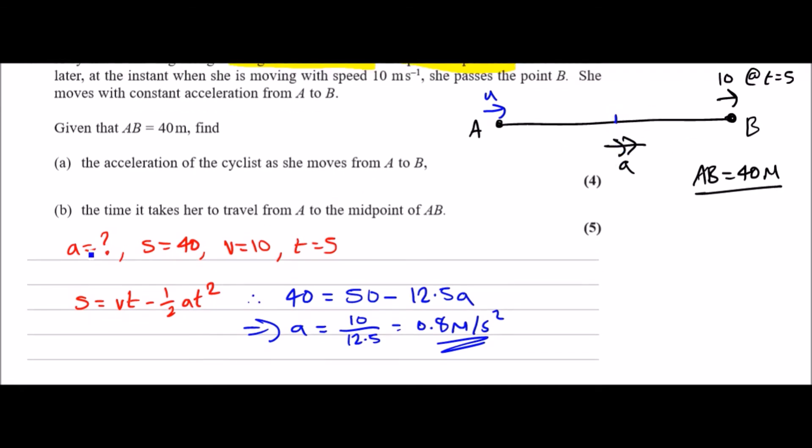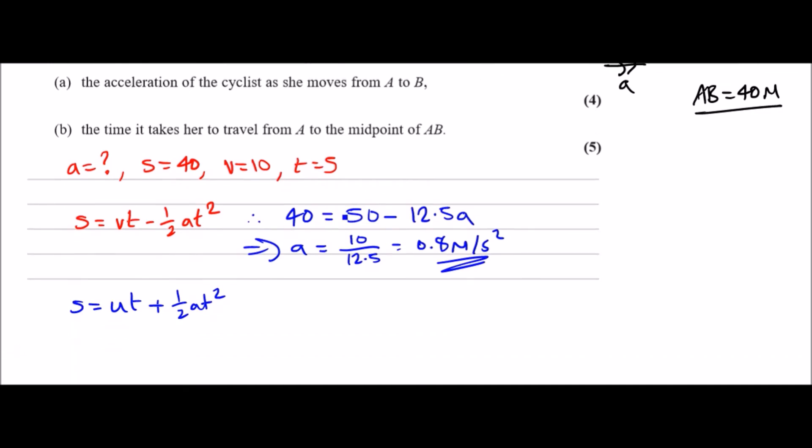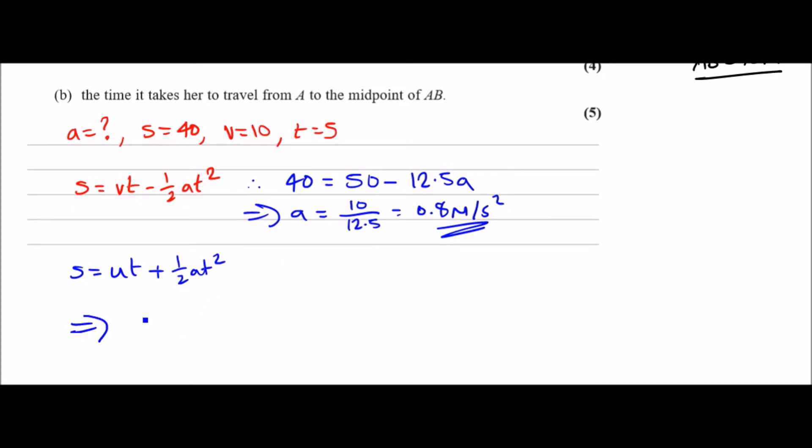Another relatable equation we could have used is s equals ut plus half at squared, since we already know what a is now. We've got s and t already - s is 40 and t is five seconds, we can find u. Make u the subject: u equals s minus half at squared over t. S is 40 minus half of 0.8 times t squared, 25, over 5. You should get 6 meters per second. That is the initial speed there.